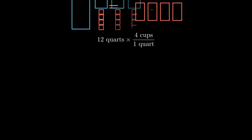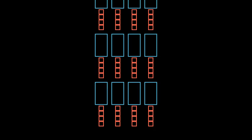Let's visualize what this means. We have 12 quarts, and each quart contains four cups. We can represent this as an array.